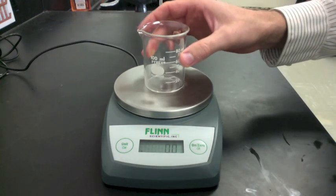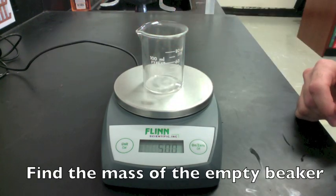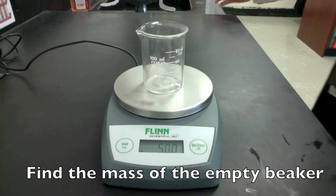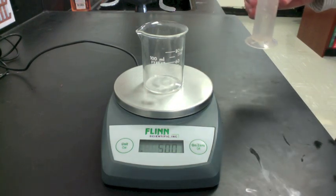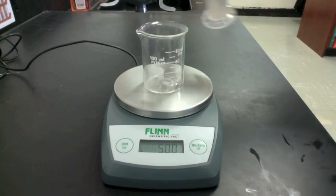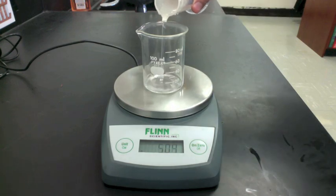First find the mass of the empty beaker, 50.0 grams. When you pour in the liquid, the reading on the scale will increase.